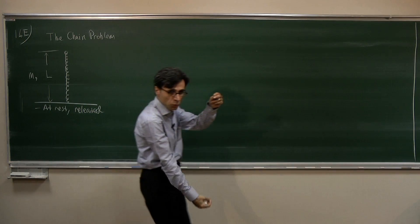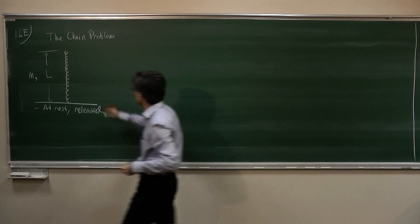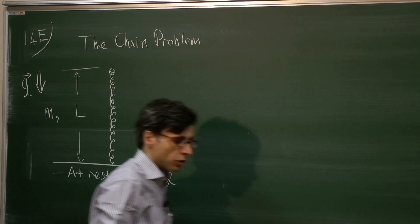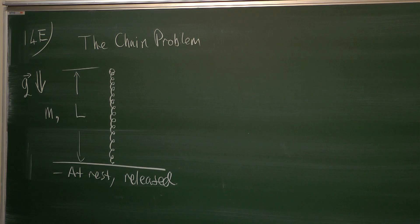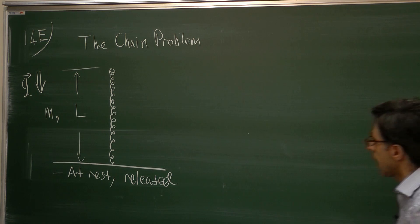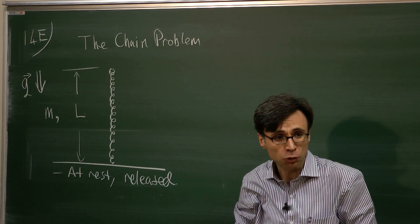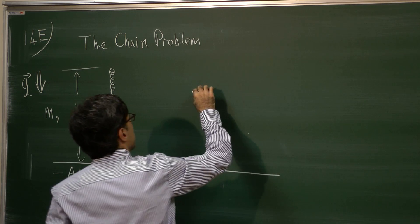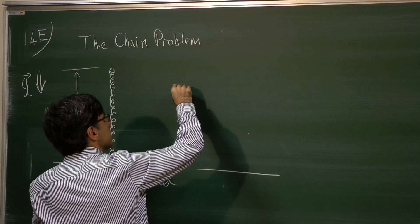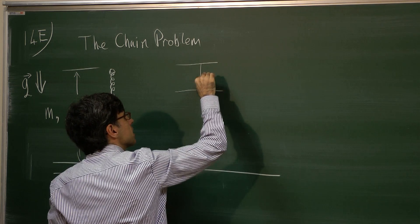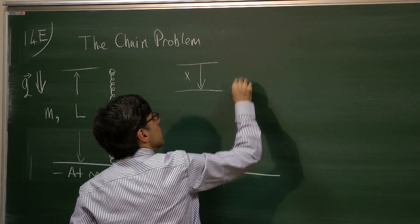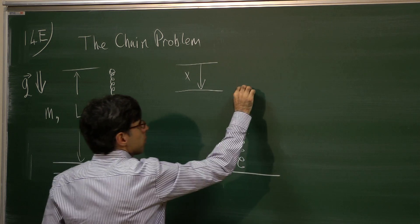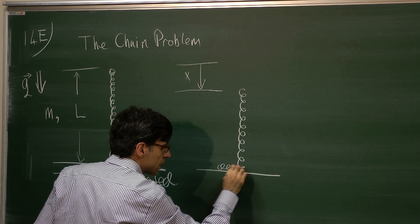The chain will start to move downwards due to the gravitational force. The question is: what is going to be the total force acting on the chain after the chain goes down by an amount of x? At a later time, here is the table, and the chain falls down freely such that this distance is marked as x. The chain is here, moving downwards, and some segment of the chain is on the floor.